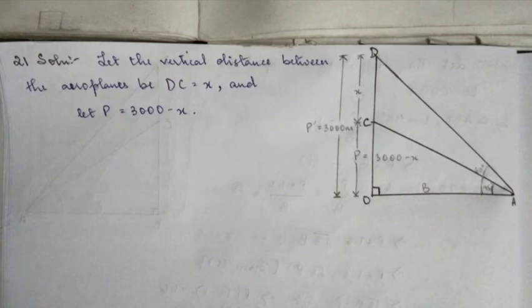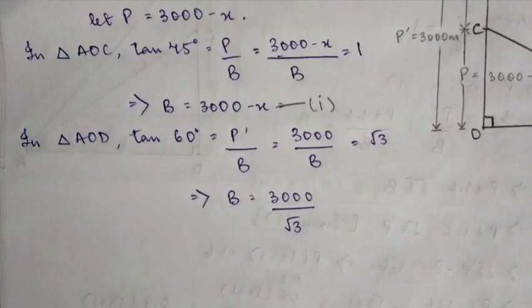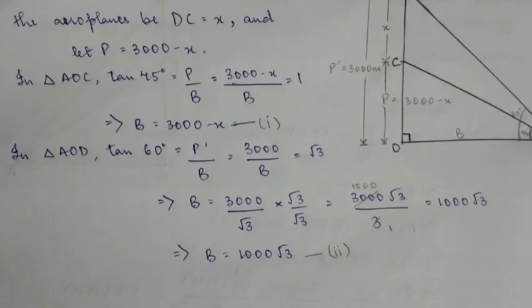Next up in triangle AOC, tan 45 degrees, P is 3,000 minus X. So you have B which is equal to 3,000 minus X which will be equation 1, alright. But we are not going to leave it like that, we are going to rationalize the denominator by root 3 and root 3, so after that you get 1,000 root 3. This will be equation 2, okay.